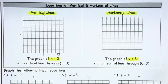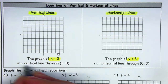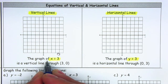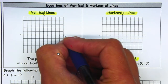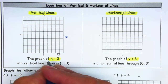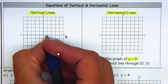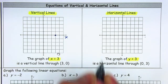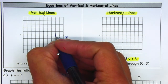A graph given to you as x is equal to 3 is a vertical line that crosses the point (3, 0). If you remember, this is your x-axis, so we're going to go on the x-axis to the number 3 — 1, 2, 3 — and then just expand it.